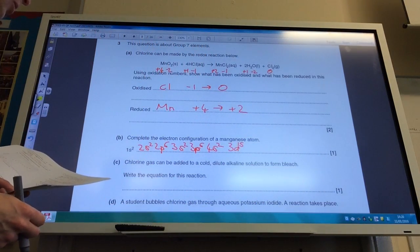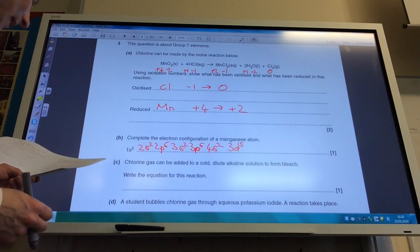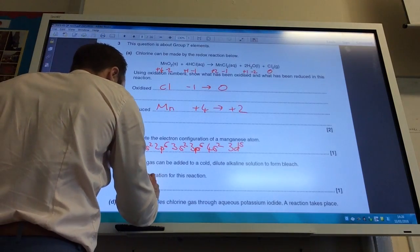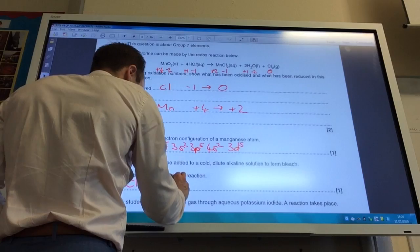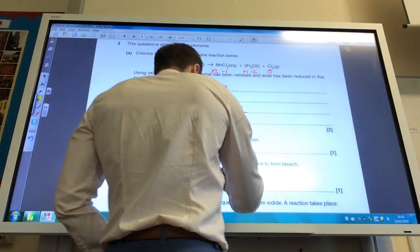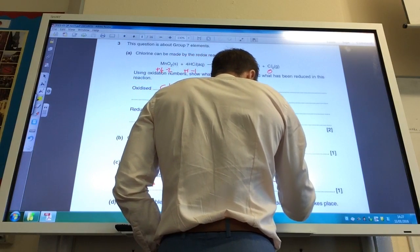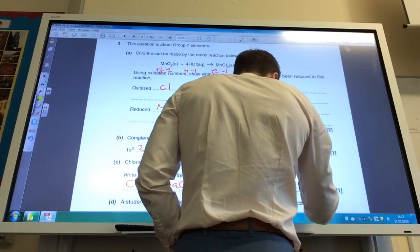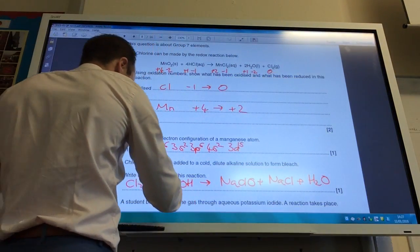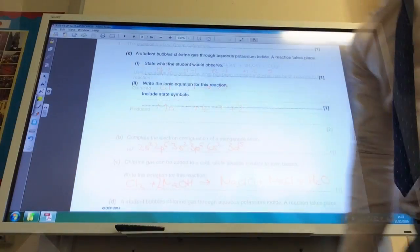Chlorine gas can be added to cold dilute alkaline solution to form bleach. Write an equation for that. This is actually on the spec, so you should know this equation. So you've got chlorine plus sodium hydroxide is going to give you sodium chlorate plus sodium chloride plus water, like so. And to get that to balance, you need two sodium hydroxide.